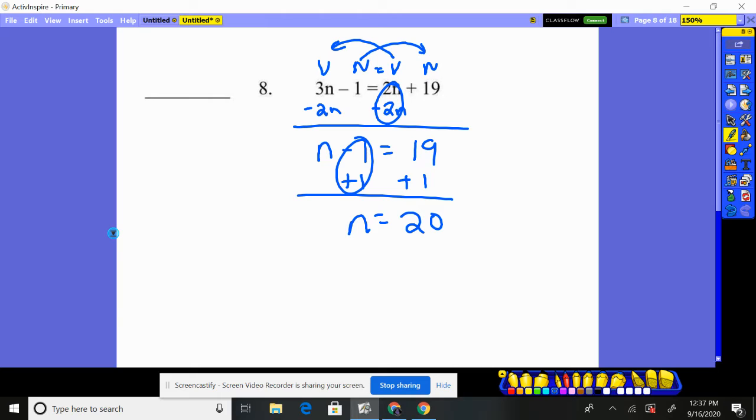That will be the value. Let's check out, 3 times 20 minus 1, does that equal 2 times 20 plus the 19? Well, that's 60 minus 1, 59, 40, then 59. Yes, I know 100% sure that I'm correct for number 8.